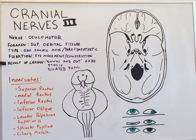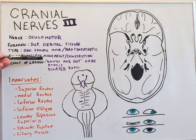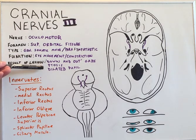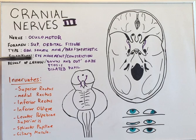A lesion to the ocular motor nerve can result in down-and-out gaze, ptosis, and dilated pupils, which we will go over momentarily.